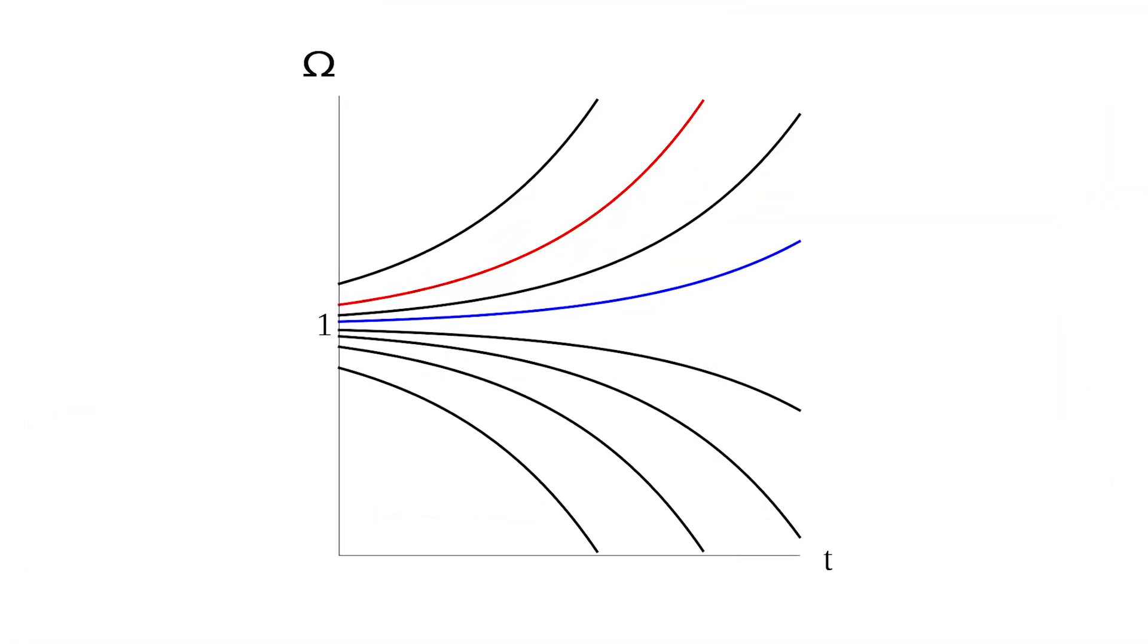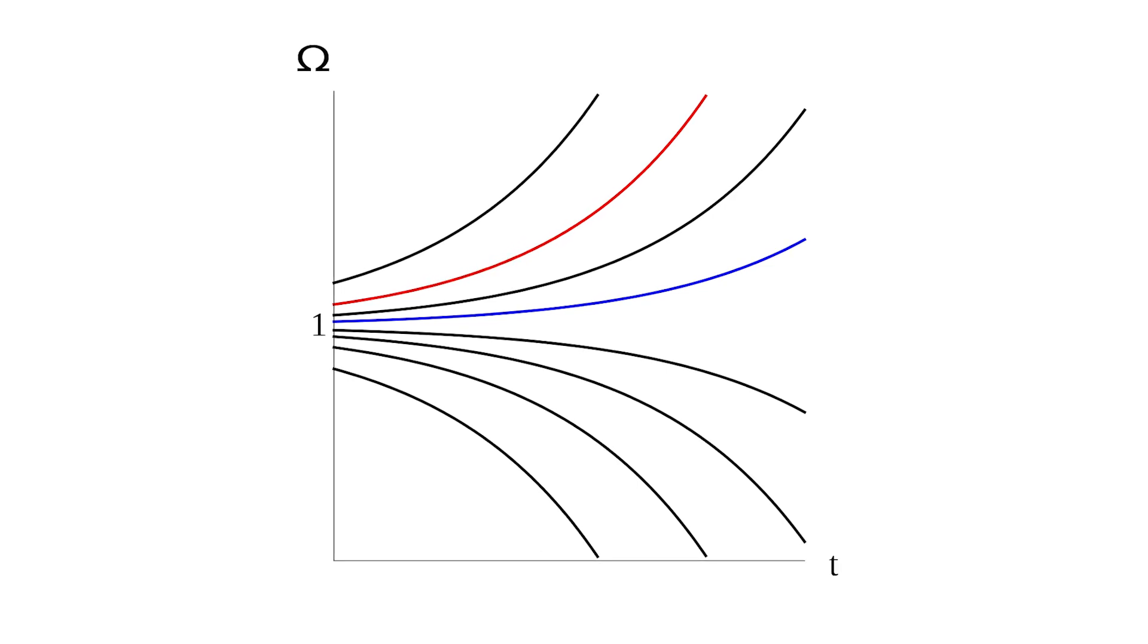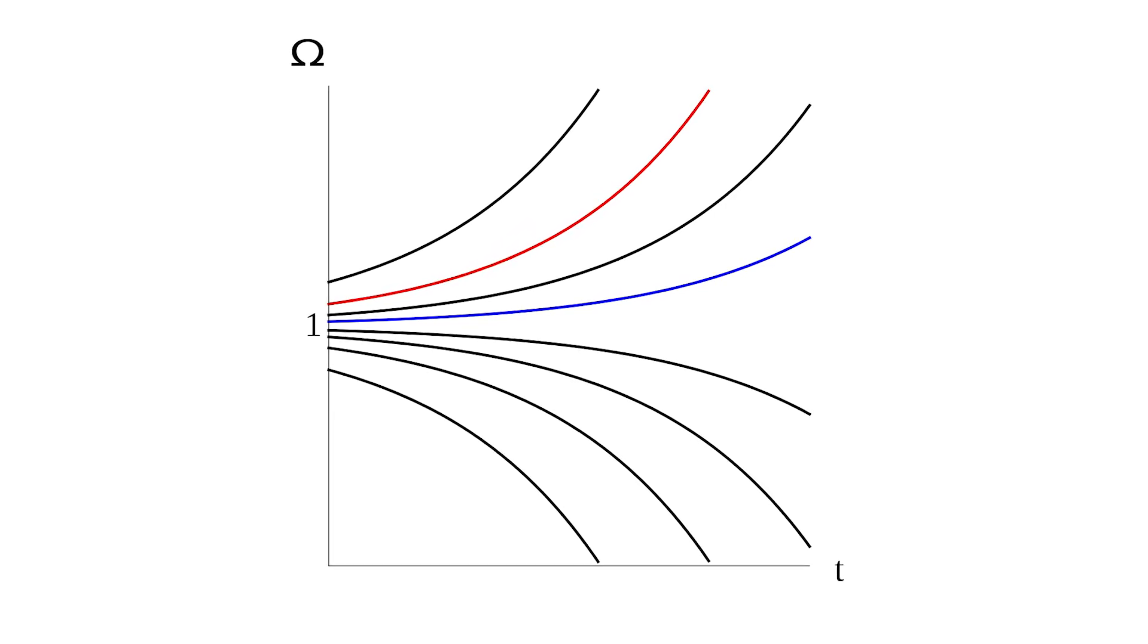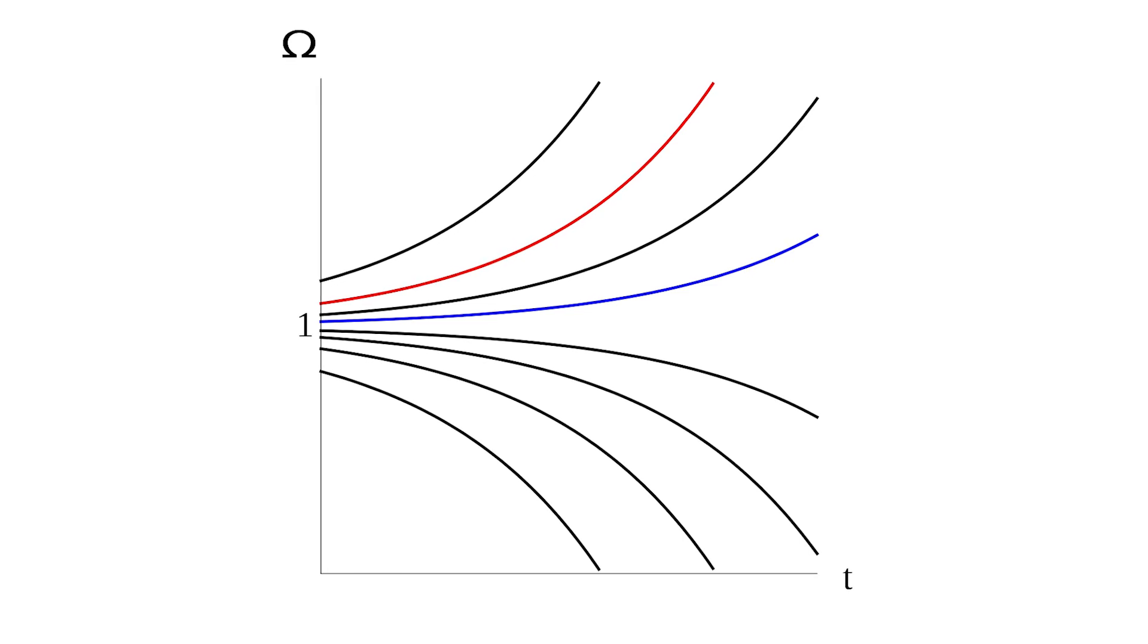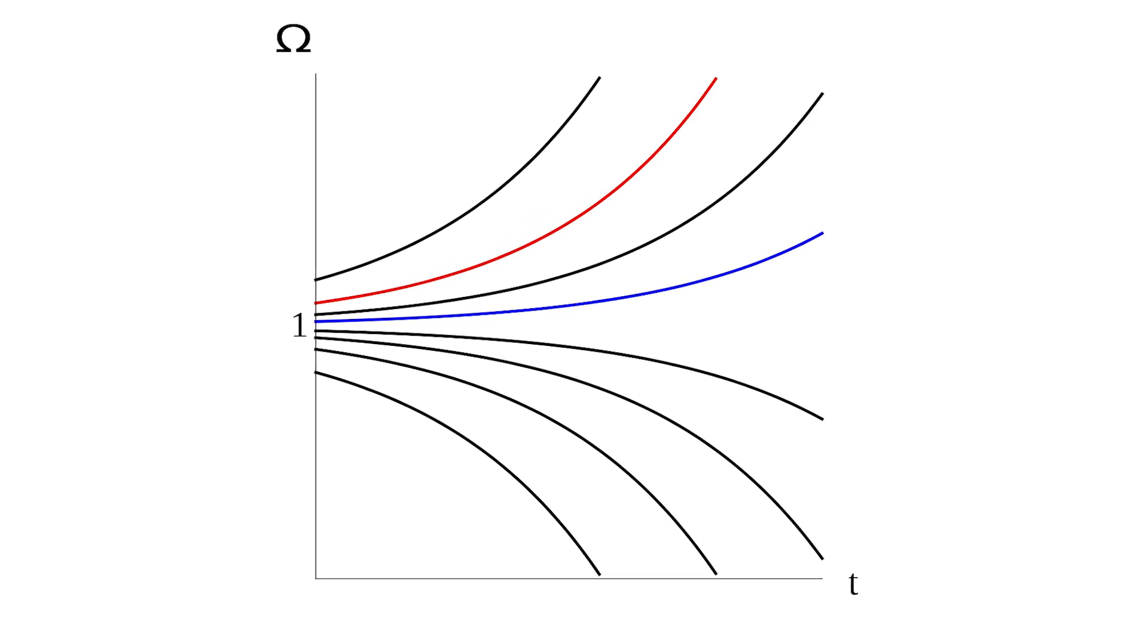For Omega to be anywhere in the allowed range today, Omega must have equaled 1 to an accuracy of 15 decimal places. This is mainly known as the flatness problem.